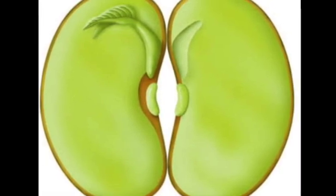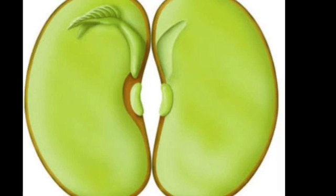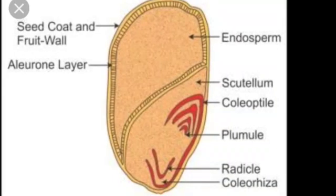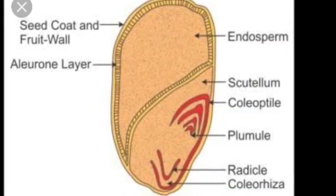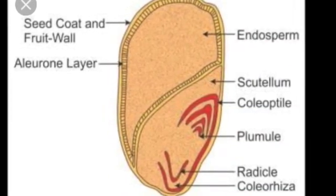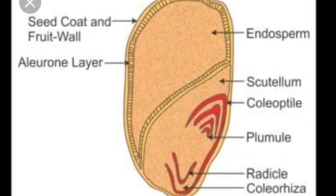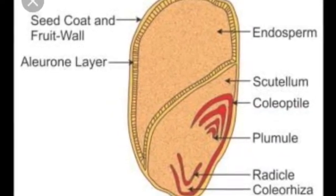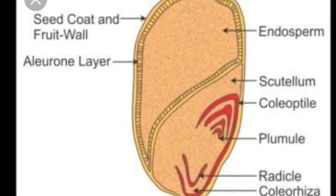Now we will talk about dicotyledons. If a seed can be split into two equal parts, it is one of the dicotyledons. The monocotyledon is different — it has one cotyledon, while the dicotyledon has two cotyledons.